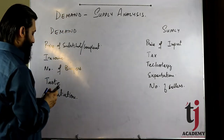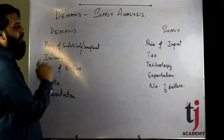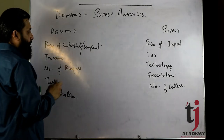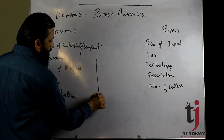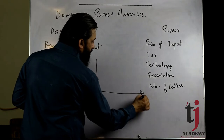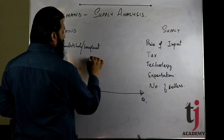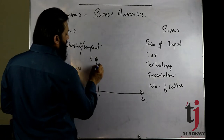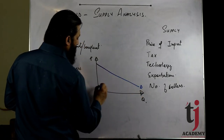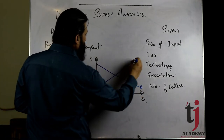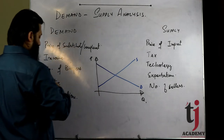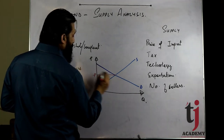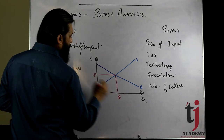अब हम देखते हैं कि इन factors के change होने से market में क्या फर्क पड़ता है। Let's suppose — यहाँ X-axis पर Quantity है, Y-axis पर Price है। यह Demand curve है, यह Supply curve है। यह Equilibrium Price है और यह Equilibrium Quantity है।